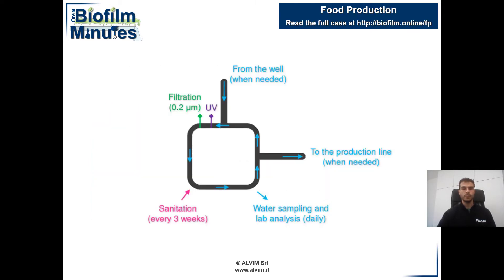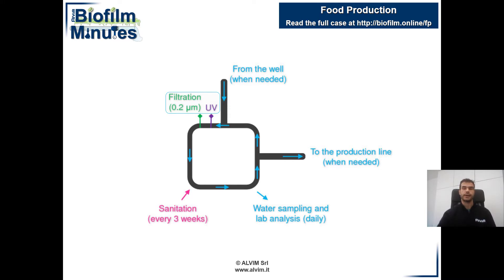In the scheme, you can see a loop where water was recirculated before use. In this yogurt production plant, water was taken from a well and stored until it was needed to clean production lines between the exchange of flavors — from vanilla to strawberry, for example. The system could be affected by microbiological growth, and thus water was constantly treated by UV radiation and filtration down to 0.2 microns.